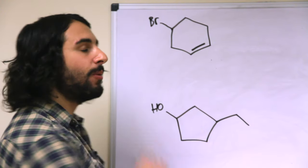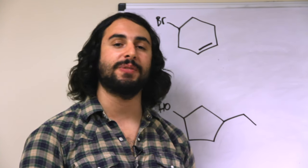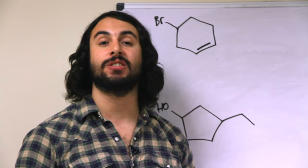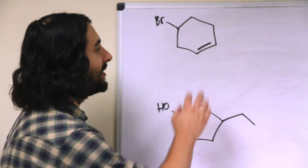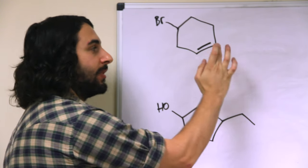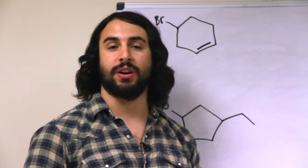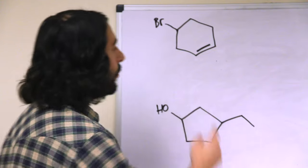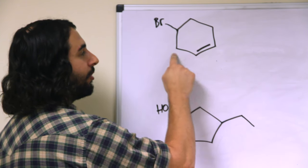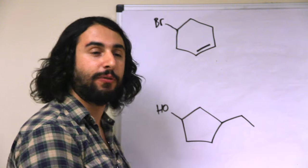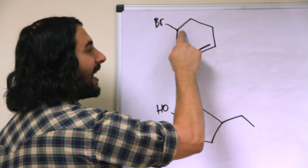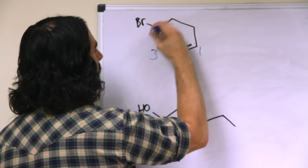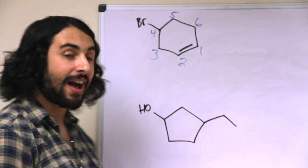are participating in the double bond are going to be carbons one and two in some order. So we have two options, either carbon one and two or carbon one and two. We will choose one of those two directions so as to give any other substituents occurring sooner. We are going to have to number this one, two, three, four because then the bromo group will occur on carbon four as opposed to one, two, three, four, five occurring in carbon five. So that is why we will number it this way. And so now we are going to